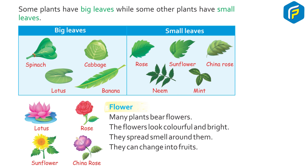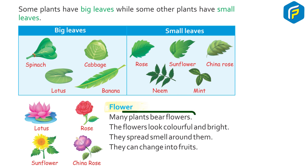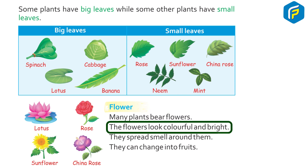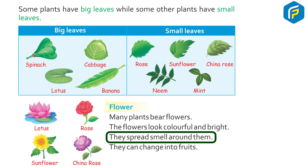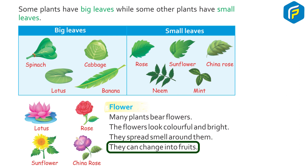Small leaves: Rose, Sunflower, China Rose, Neem, Mint. Flowers: Many plants bear flowers. The flowers look colorful and bright. They spread smell around them. They can change into fruits.